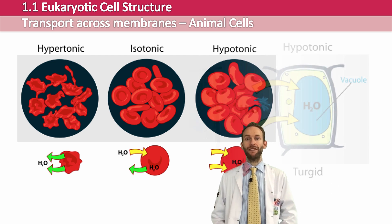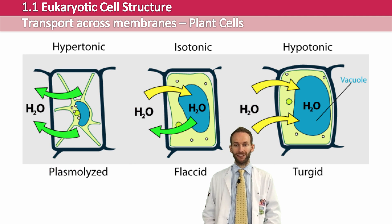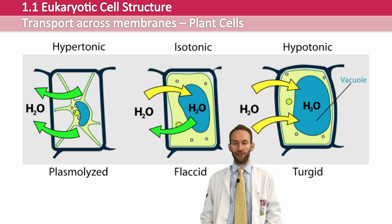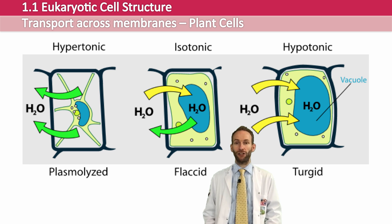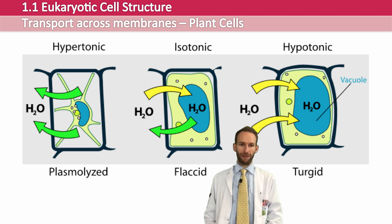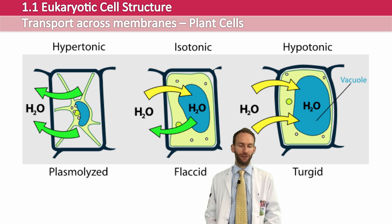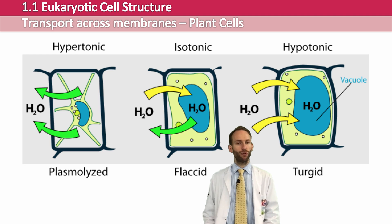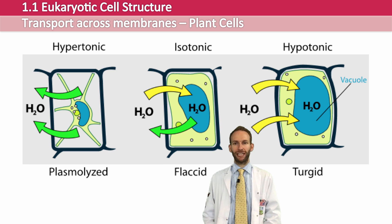Plant cells are a bit different. They have a cell wall which is extremely strong — it's made of cellulose and it can withstand extremely high pressures. This means that when water moves into a plant cell, it becomes turgid — it doesn't burst, it becomes turgid. That's very important because it gives the cell turgor pressure, which allows the plant to stand upright. If a plant cell is placed in hypertonic solution, water will move out of the cytoplasm, out of the vacuole and the cell sap, and the cell will become plasmolysed as the membrane shrinks and pulls away from the cell wall. The cell wall won't change shape, but the membrane will shrink and pull in.